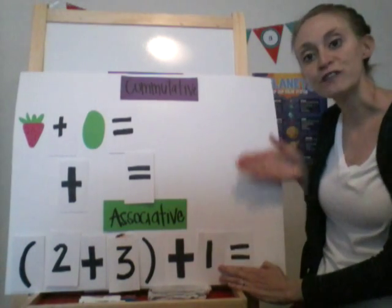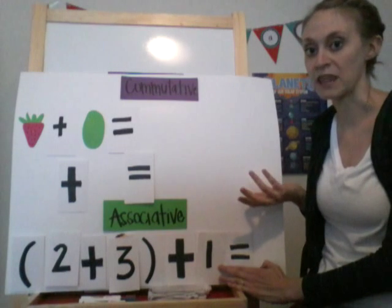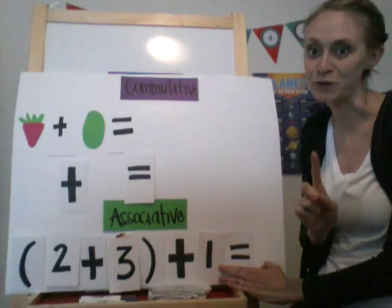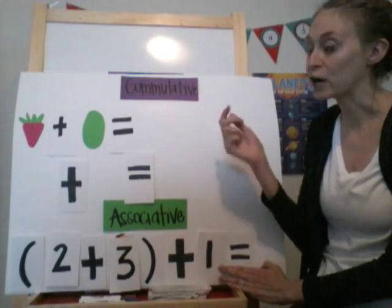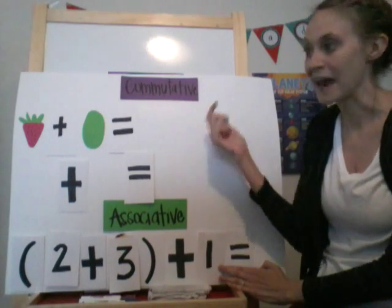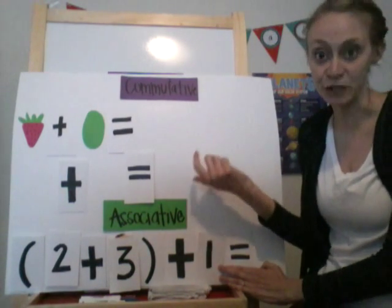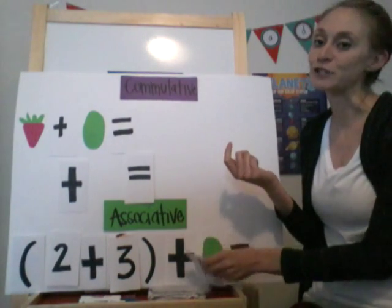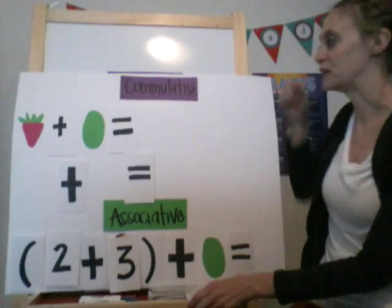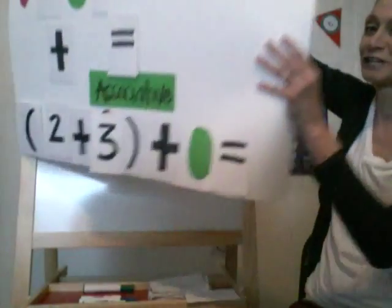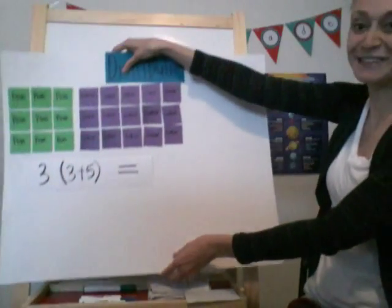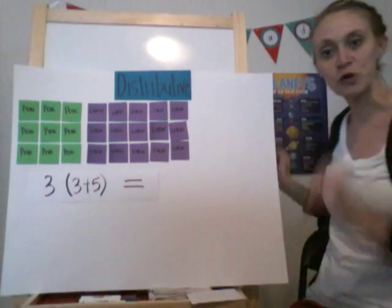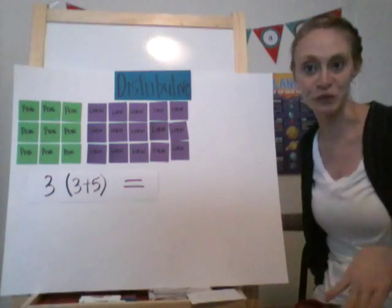With both of these properties, they're similar in the fact that you can add or multiply them in any order and it will still equal the same answer — kind of cool. Now let's go to our third property. This property you guys already know: the distributive property. We're just going to do a quick review to make sure you remember it.